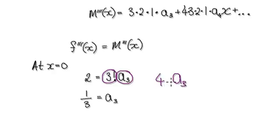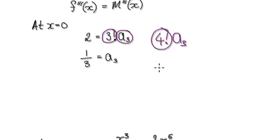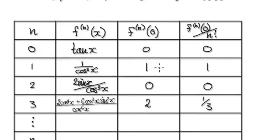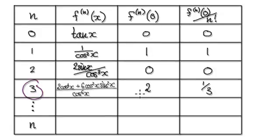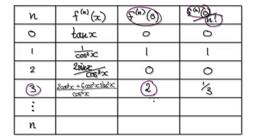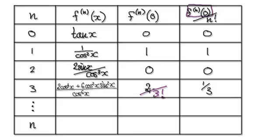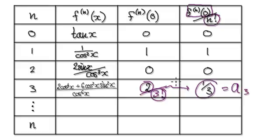To obtain your A4, you would divide by 4 factorial. Going back to this table, to obtain your A3, you would get this thing here divided by — in this case — 3 factorial. This thing here is basically the number 2, and then this is your 3 factorial. So that would then give you a third. This here is your A3, and so on.